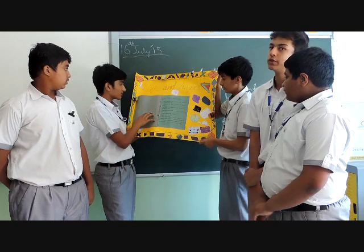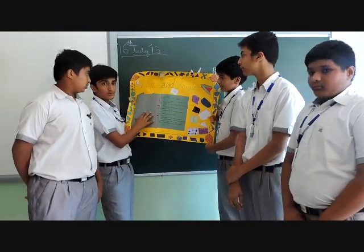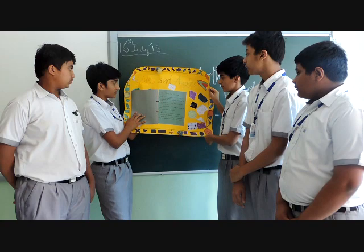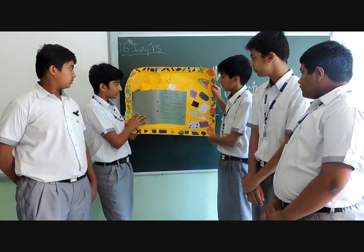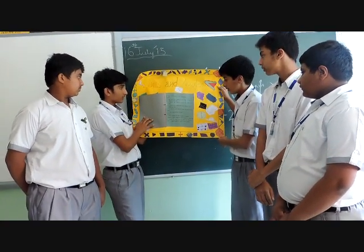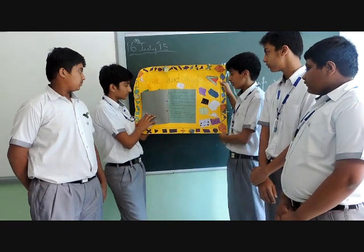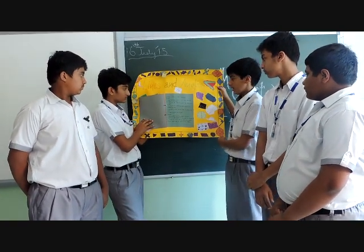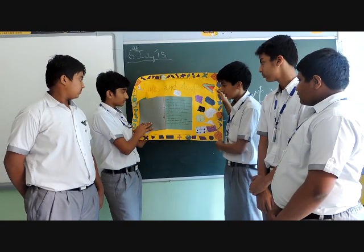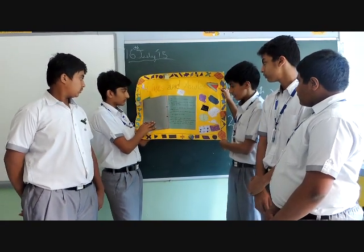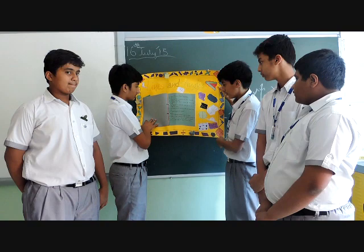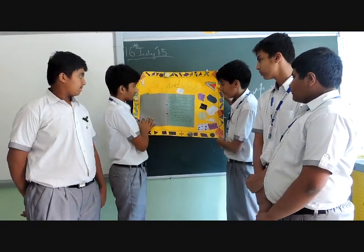These are Euclid's axioms and postulates. Things which are equal to the same thing are also equal to one another. If equals are added to equals, the whole is equal. If equals be subtracted from equals, the remainders are equal. Things which coincide with one another are equal to one another. The whole is greater than the part.